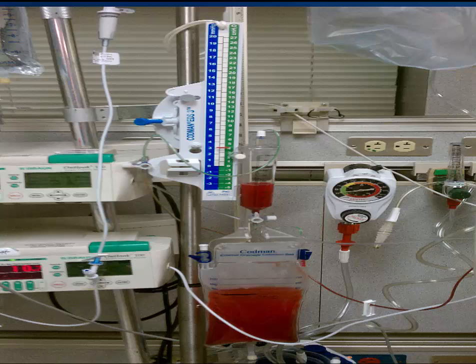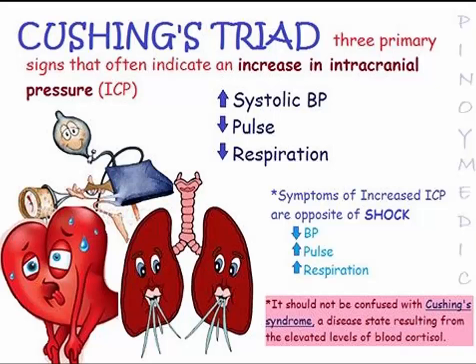Cushing's triad is systolic hypertension with widening pulse pressure, bradycardia, and respiratory changes. This indicates that intracranial pressure has increased and brain herniation may be imminent unless immediate action is taken to reduce ICP.